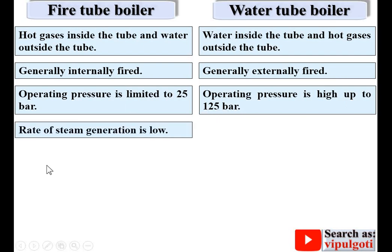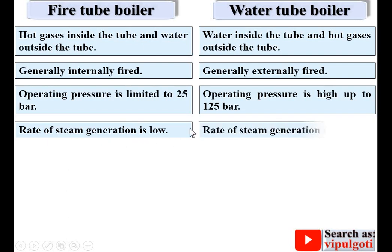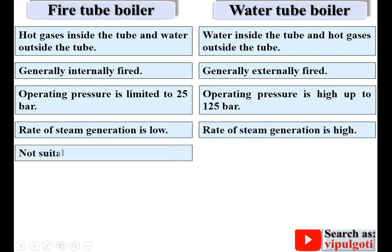In case of a fire tube boiler, the rate of steam generation is low because the pressure is up to 25 bar only, so the steam generation rate is low. In case of a water tube boiler, the rate of steam generation is high because you can increase the pressure up to 125 bar.